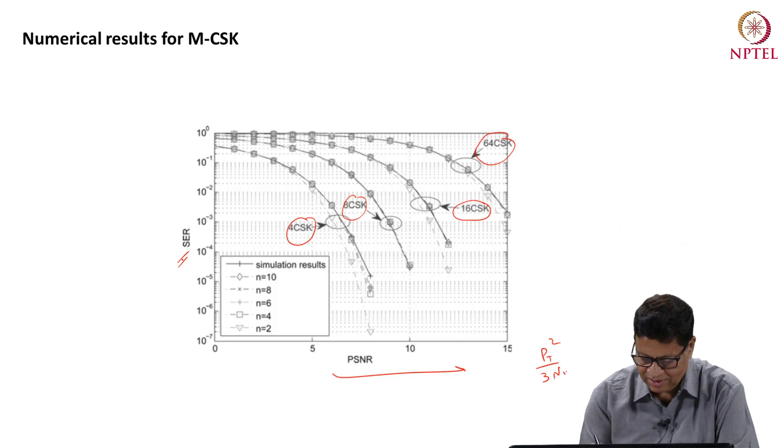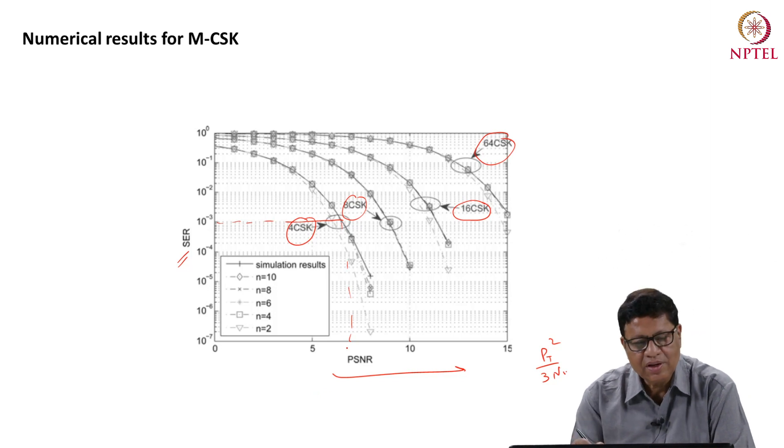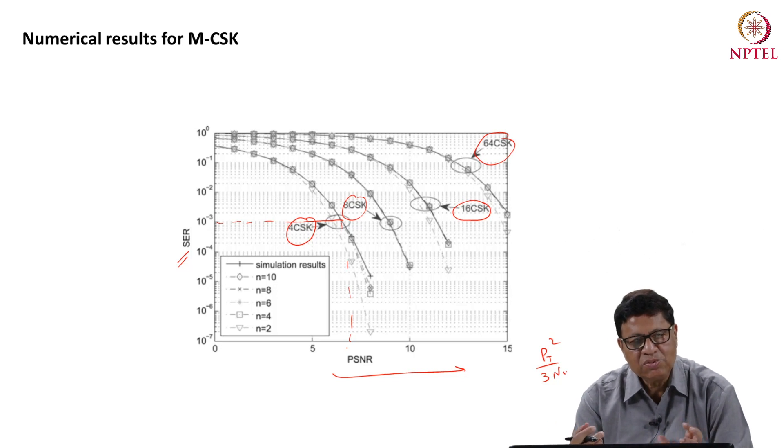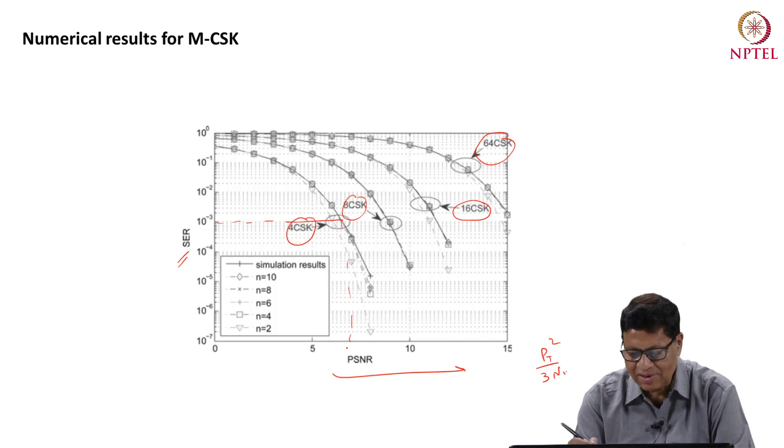For 4 PSK for example to meet 10 raised to minus 3, you require close to 7 or 8 dB of SNR and as you increase the value of N or the number of points because the distance, the Euclidean distance between the two constellation points gets reduced. Hence, you require more P SNR or more power for the signal to get 10 to the minus 3 and the same holds for 16 CSK and 64 CSK.